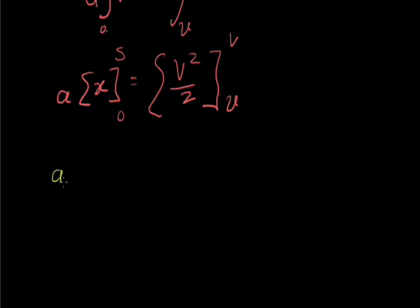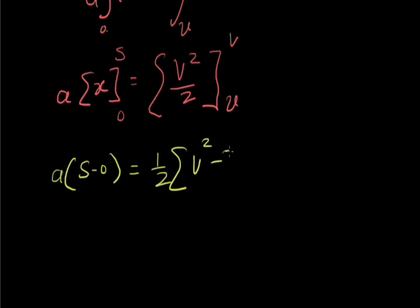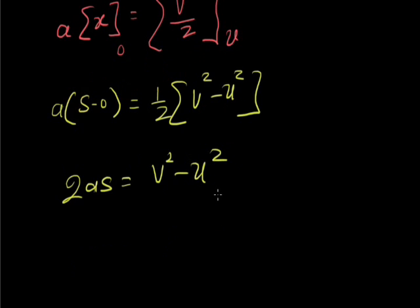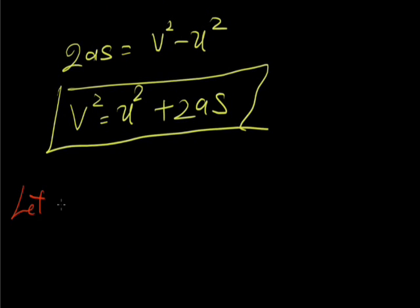Opening the limits: a into s minus 0 equals 1 by 2 times v squared minus u squared. So 2as equals v squared minus u squared, and v squared equals u squared plus 2as. This is the third equation of motion.